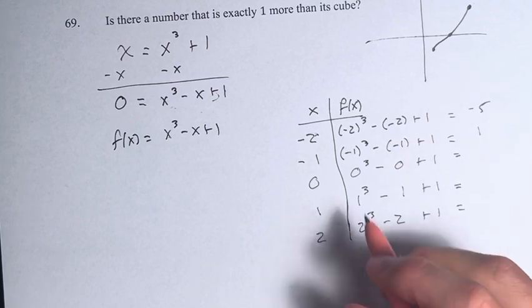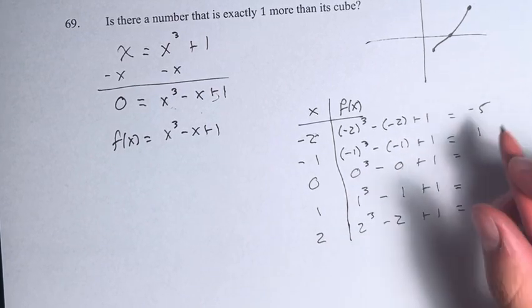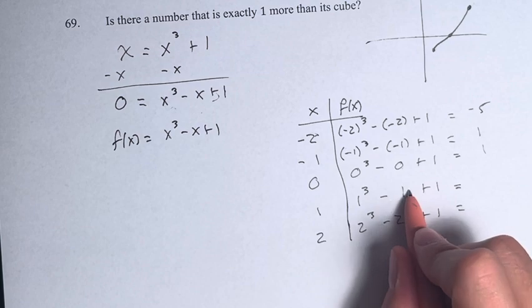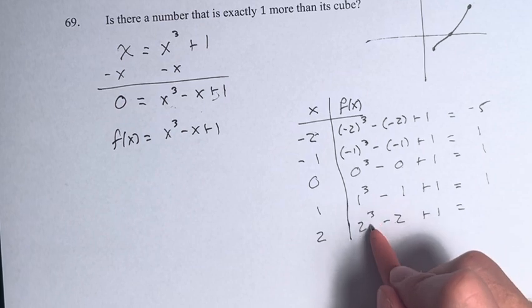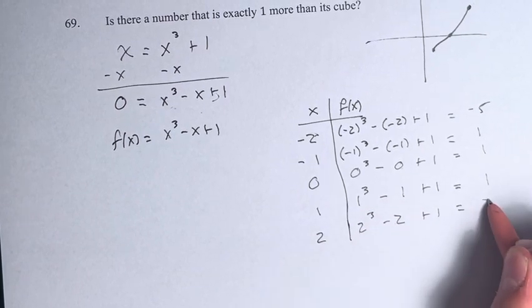Zero cubed minus zero plus one is one. One cubed minus one is zero, plus another one is one. And two cubed minus two plus one is eight minus two is six, plus one is seven.